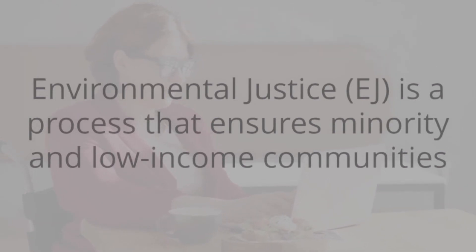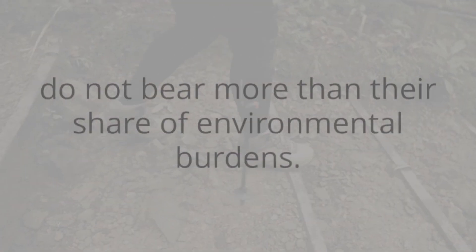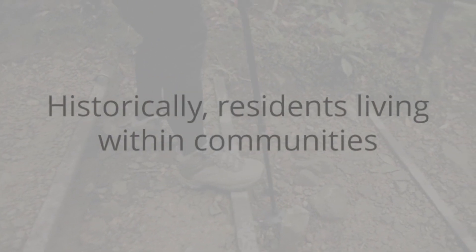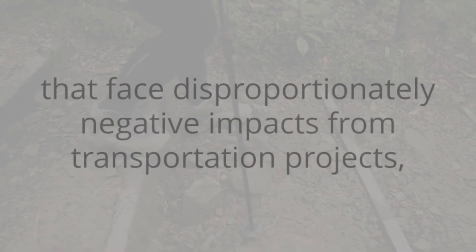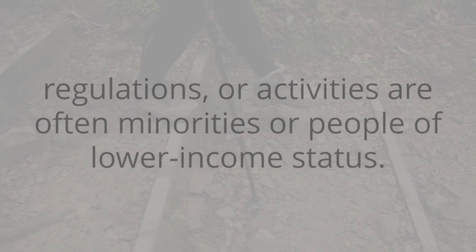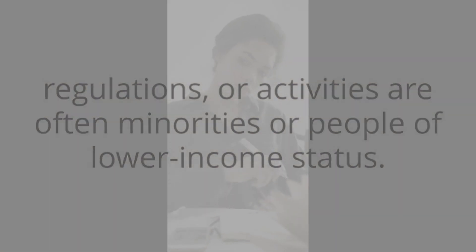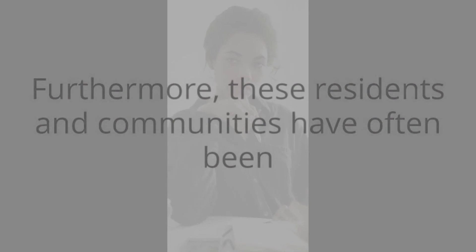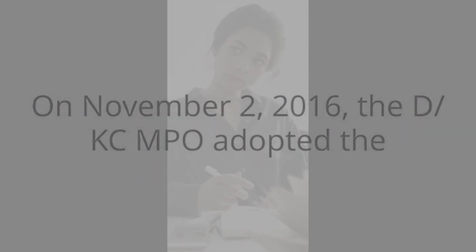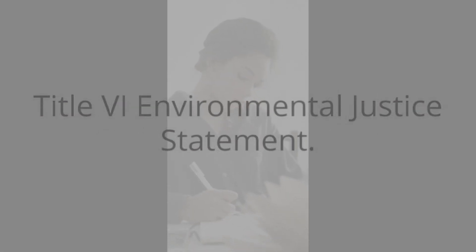Environmental justice is a process that ensures minority and low-income communities do not bear more than their share of environmental burdens. Historically, residents living within communities that face disproportionately negative impacts from transportation projects, regulations, or activities are often minorities or people of lower income status. Furthermore, these residents and communities have often been excluded from transportation policy settings or decision-making processes. On November 2, 2016, the Dover-Kent MPO adopted the Title VI Environmental Justice Statement.